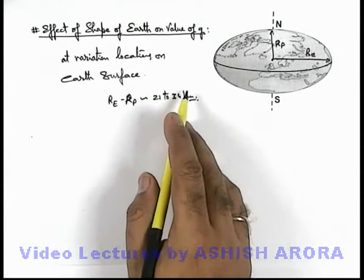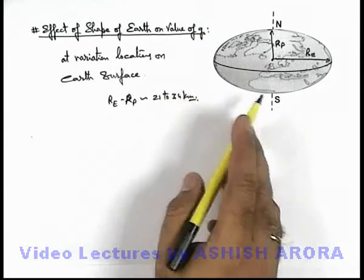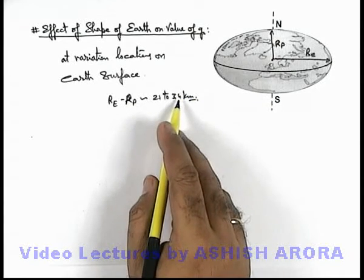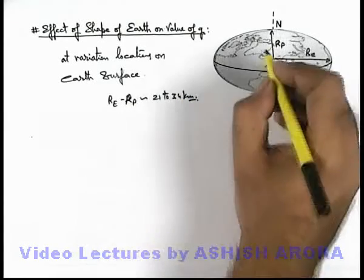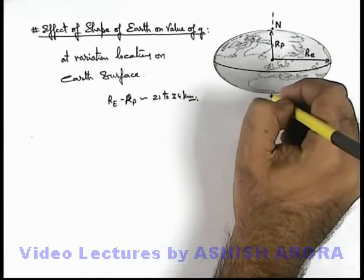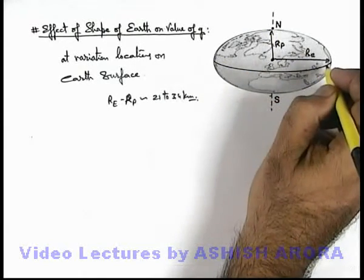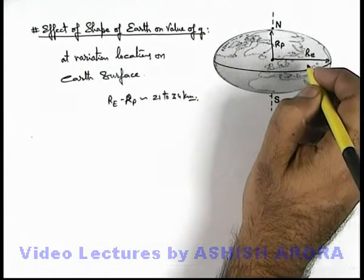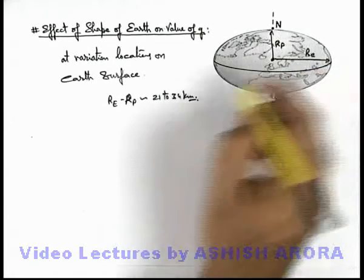So it varies from location to location. With respect to the earth center, poles are relatively closer and all those points which are on equator are relatively farther.